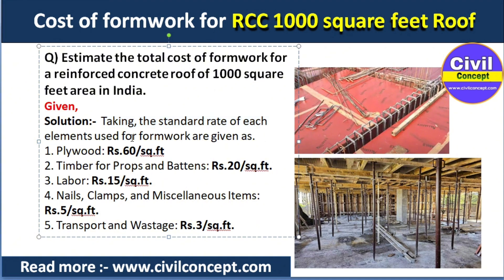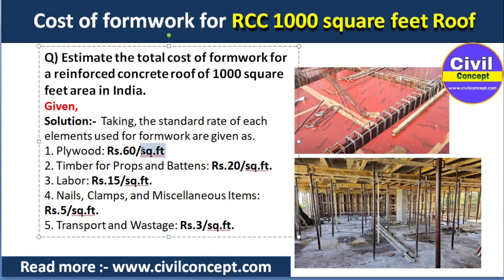First, what are the elements of formwork? The elements are plywood, timber, levers, nails, and transportation charges. I will take the standard rate for each element. According to India, the rate of plywood is 60 rupees per square feet.